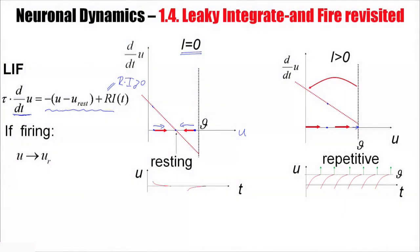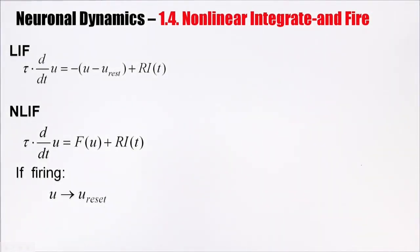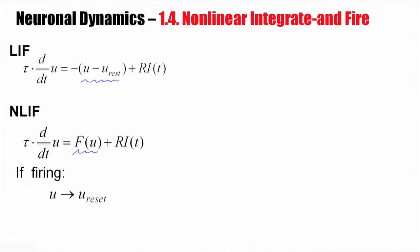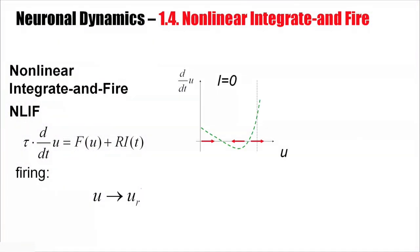The graphical picture allows us to discuss this linear differential equation in the presence of a threshold in a transparent fashion. So let's use this for a generalization. Instead of a linear equation, we now have an arbitrary non-linear function f(u). As before, if the neuron is firing, it's going to be reset to some value u_r. So this is a similar picture as before, except that instead of a straight line, I have some curved function f(u).